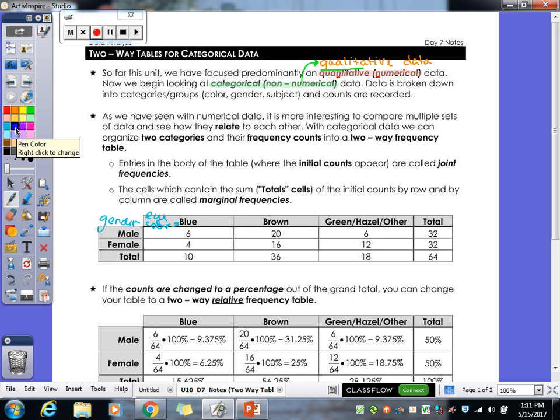As we have seen with numerical data, it is more interesting to be able to compare them and see how they relate to one another. So with categorical data, we can do that with two categories and then you put your frequency counts in there. This is saying that six males have blue eyes, and this is saying twenty males have brown eyes. But if we look over here at the total, that's telling us thirty-two males total answered whatever survey it was.